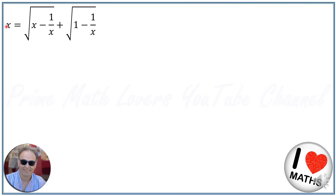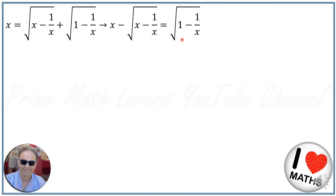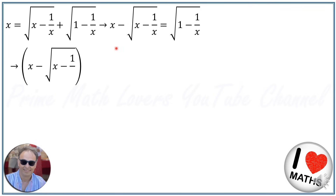First of all, we rewrite this equation and take the term square root of (x minus 1 over x) to the other side, so we will have x minus square root of (x minus 1 over x) is equal to square root of (1 minus 1 over x). Then we raise both sides of the equation to the power of 2, and we will have the left side squared equal to square root of (1 minus 1 over x) squared.